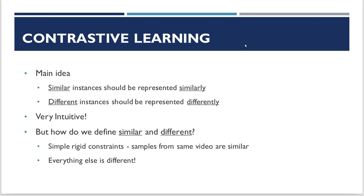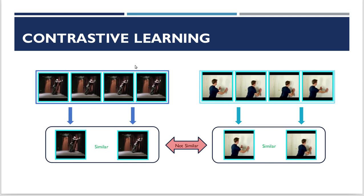Here we have two videos. The first video is of a person doing wall push-ups in a particular environment, while the second video is also of a person doing wall push-ups, although the lighting and everything else is slightly different. If we sample two instances from the first video, their representations should be similar. Likewise within the second video. However, when we compare representations between the first and second video, they should not be similar because they are from two separate videos.